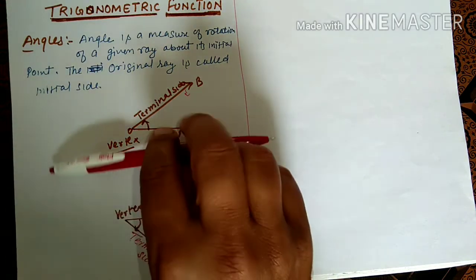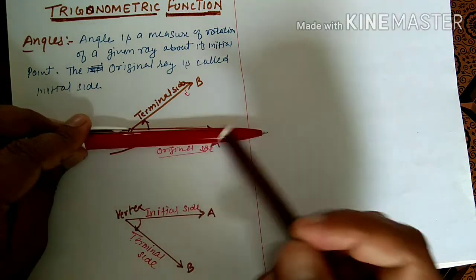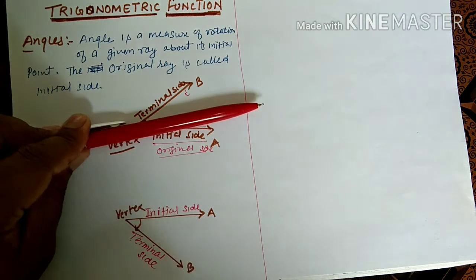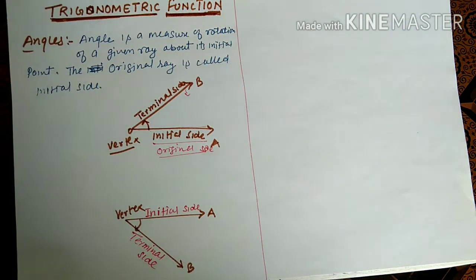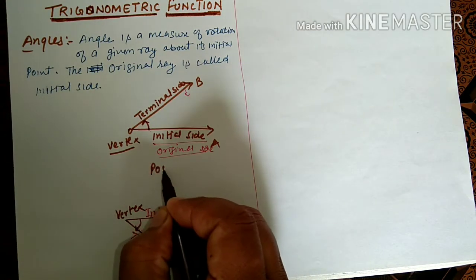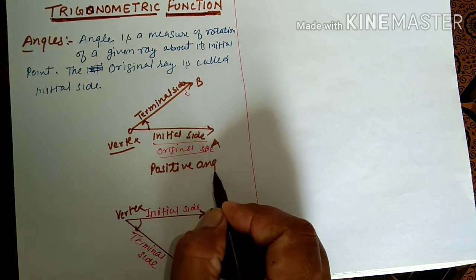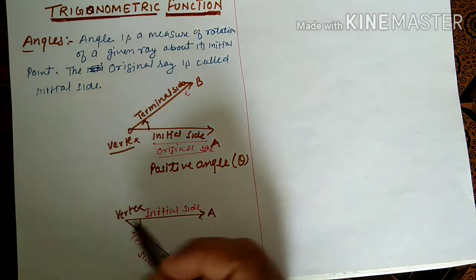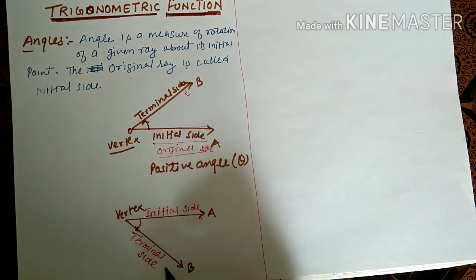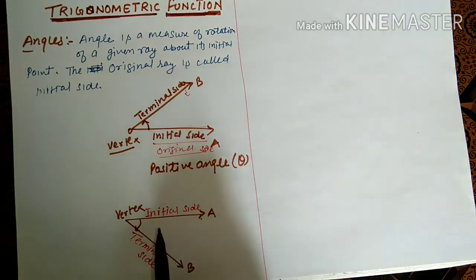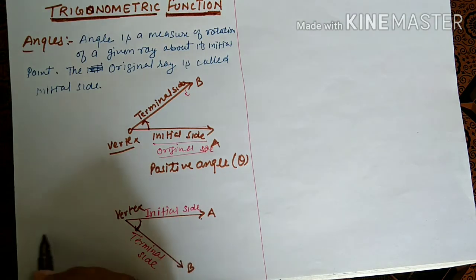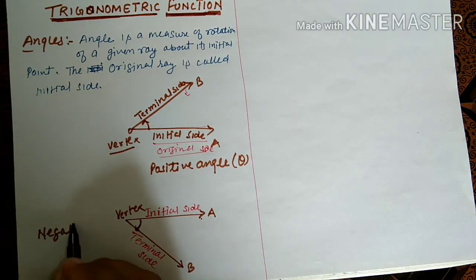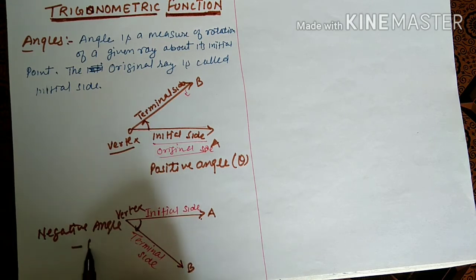If the initial side remains stationary and the terminal side moves in the anticlockwise direction, we say that is a positive angle, denoted by theta. And if the initial side remains at the same position and the terminal side moves in the clockwise direction, we say this is a negative angle, denoted by negative theta.